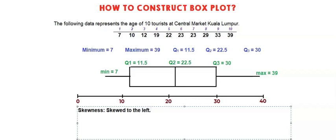What does it mean skewed to the left? This data is about age. If skewed to the left, we can say that there are more older tourists as compared to the average age of tourists.